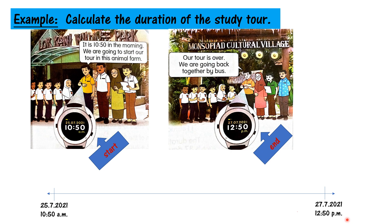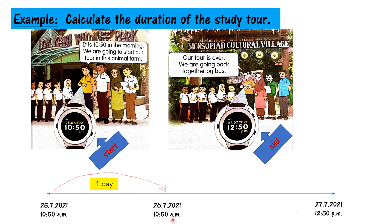Now start to calculate like this. One day later — sehari selepas itu — the date will change to 26th. Tarikhnya akan bertukar dari 25th kepada 26th, and the time remains the same. Masa tetap sama — tak berubah — 10.50 am. Ini bermaksud sehari.